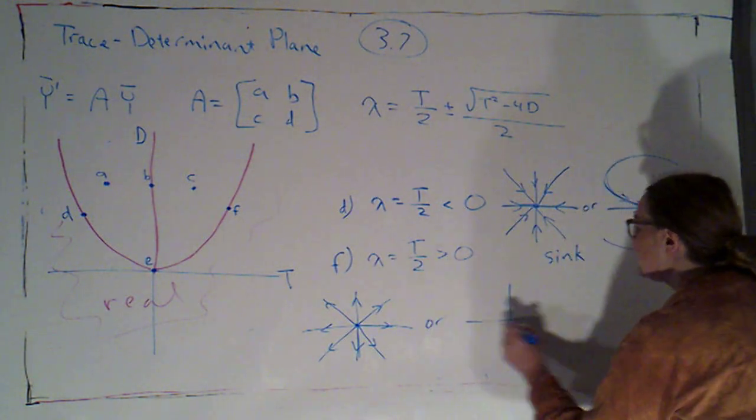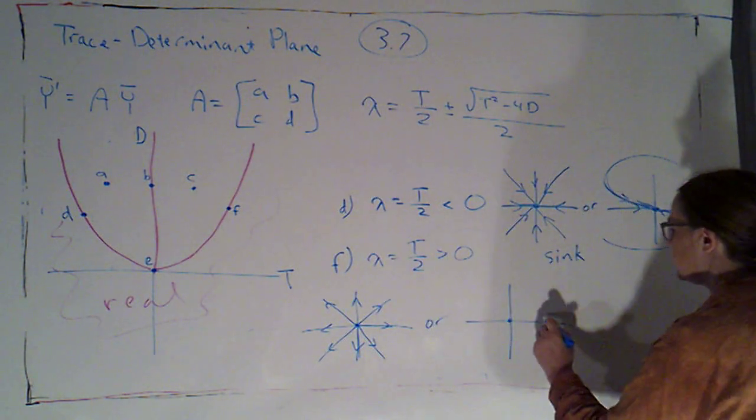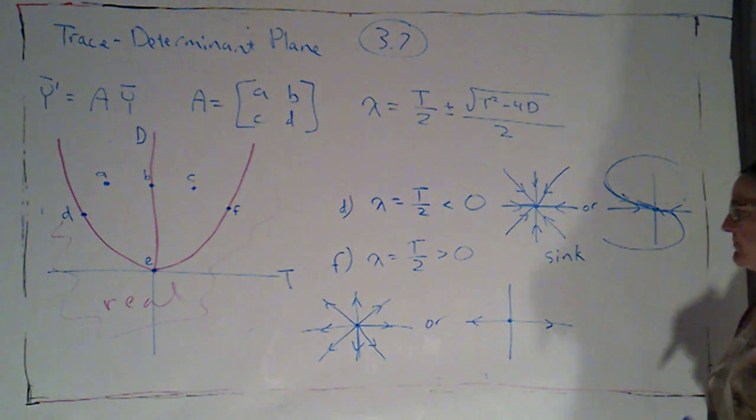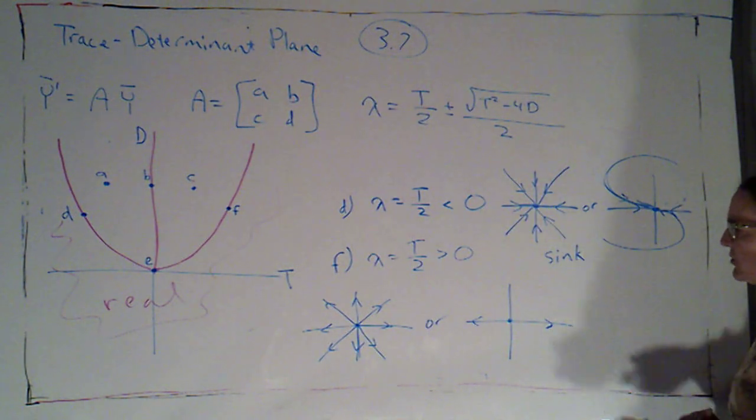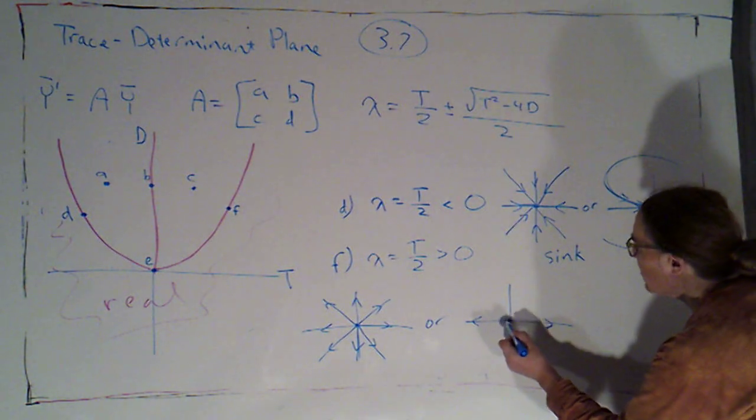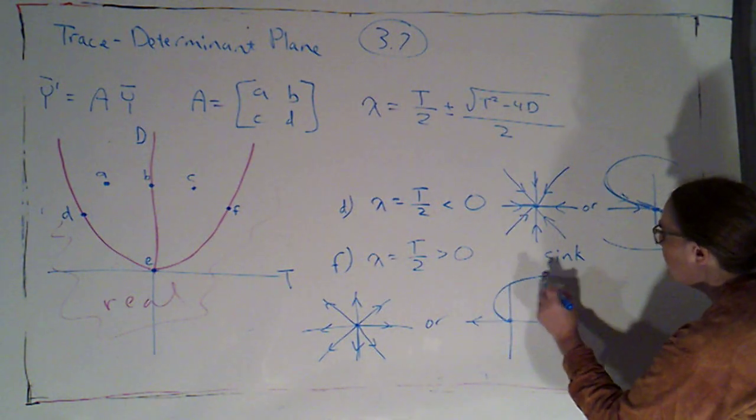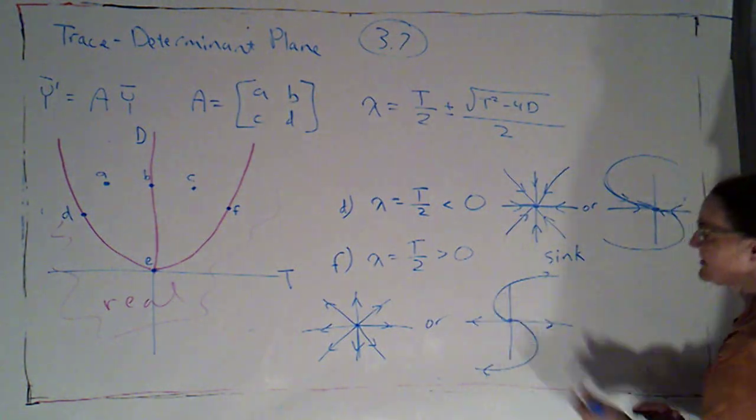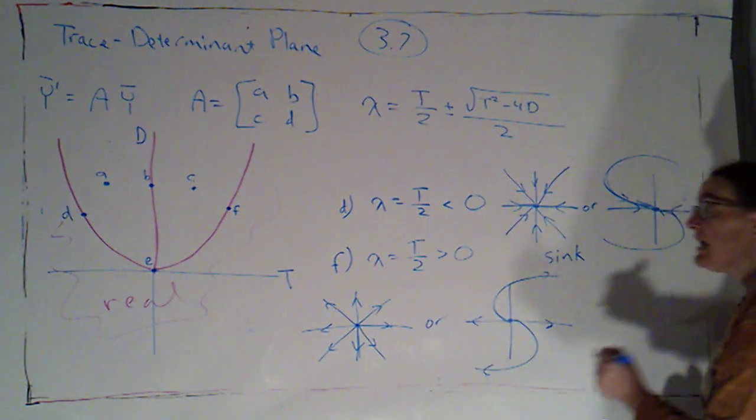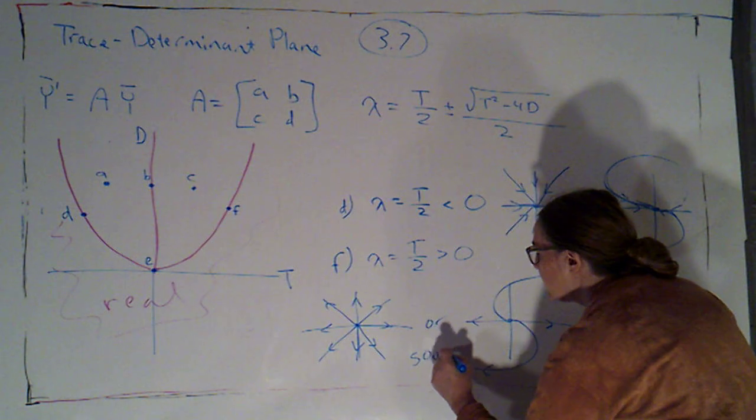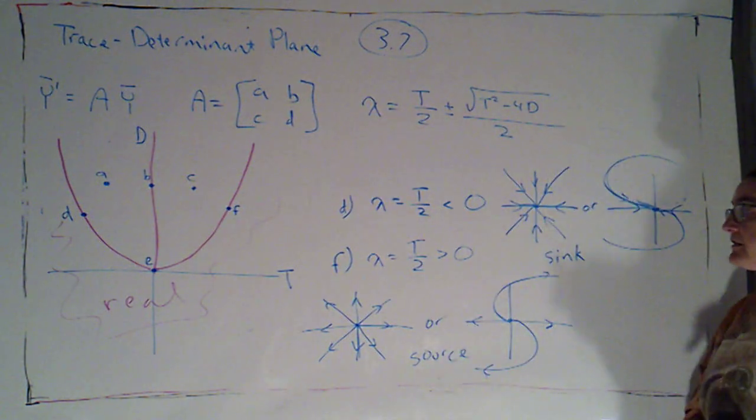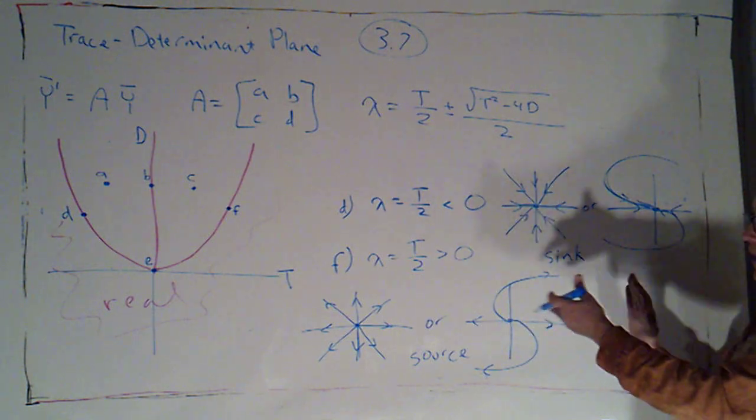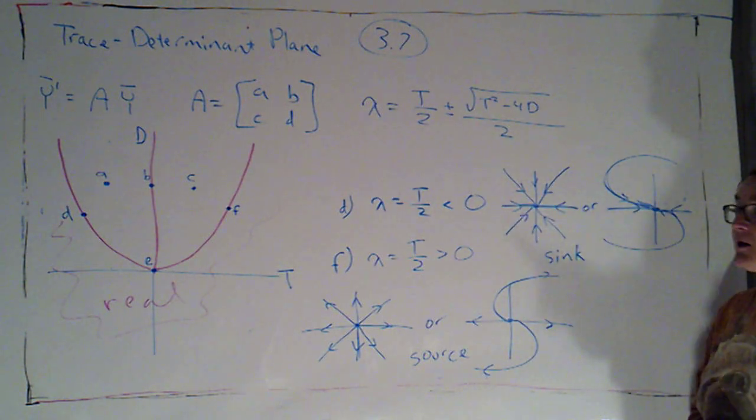Or, I might have just one independent eigenvector. Again, I'm just going to put it on the x-axis. And this would be the situation where my solutions are wanting to spiral, but they can't quite spiral because they get blocked by the straight line solution. Either way, my equilibrium solution at the origin is a source because all non-equilibrium solutions move away from that equilibrium solution.